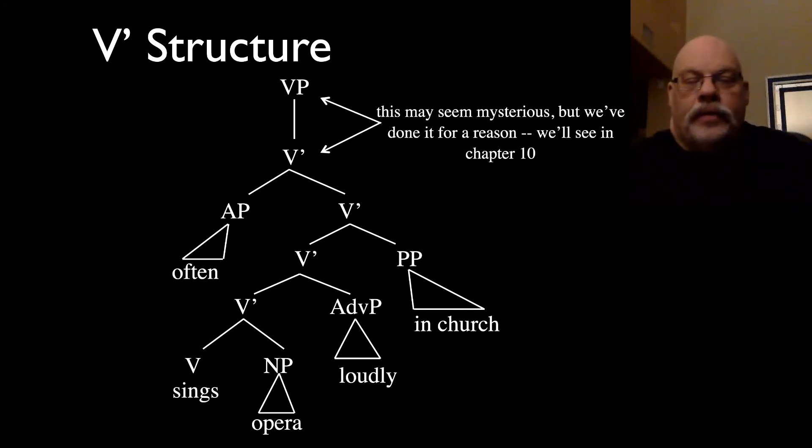The structure that we're going to propose looks like this one here. This one, just like the noun phrase rule, has these intermediate categories of V bar. The bar, again, we indicate with an apostrophe, even though it's not technically a bar.